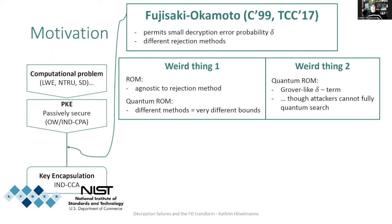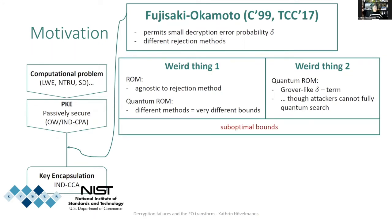Another thing we found surprising was that all security bounds so far contained a Grover-like search term that was relative to delta, the error probability, even though it is not clear how an attacker could perform a full quantum search, because a decryption failure usually depends on the secret key to which the attacker has no access.